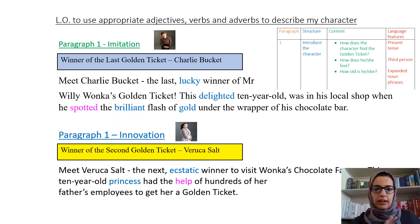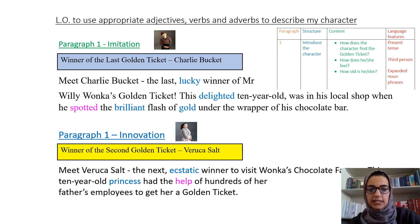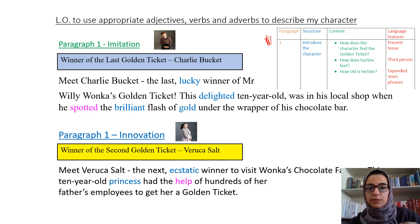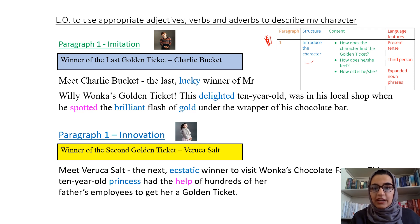Let's get started. There's a lot going on in this screen, but we need all of this information. I'm going to start by looking at the boxing up grid right here because that tells me what I need to include in the first paragraph. It tells us we're going to introduce the character and you need to include these three points: how the character finds the golden ticket, how does she feel, and how old is she.